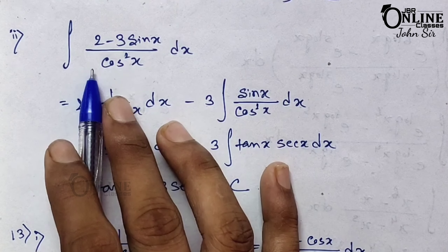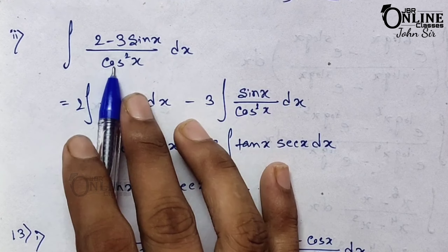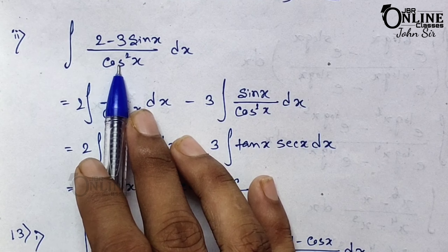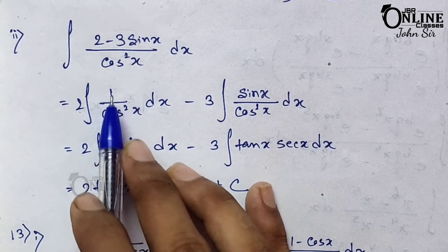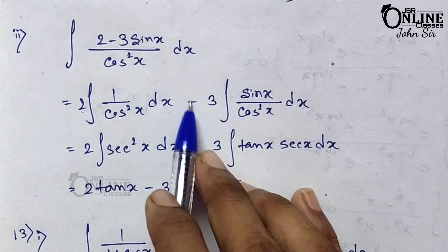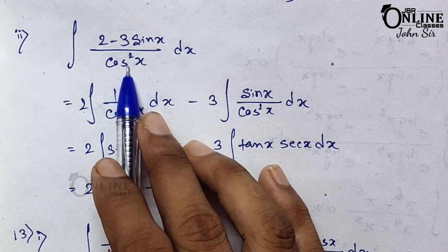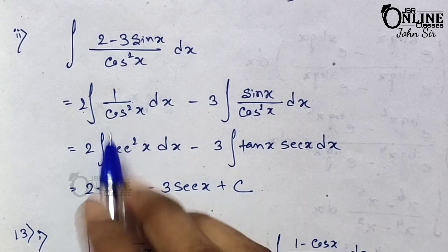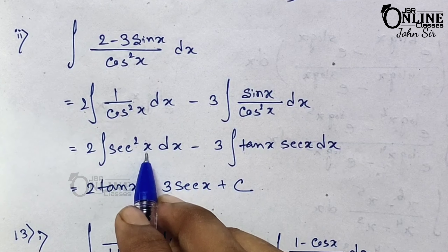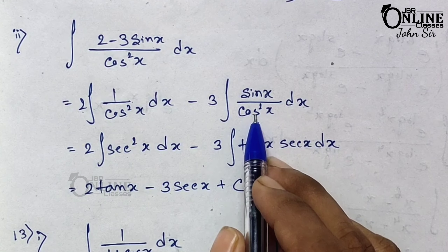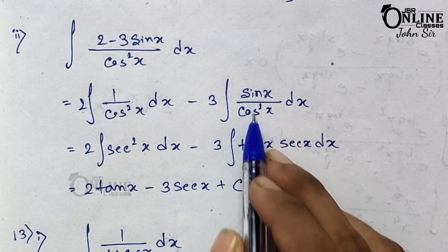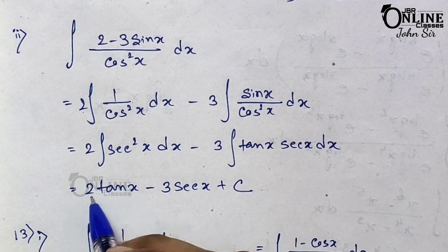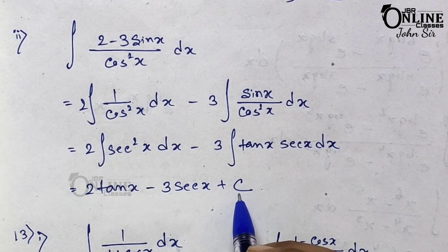Sum 12.2: integration of (2 − 3sin x) / cos²x. Separate this: 2·(1/cos²x) − 3·(sin x / cos²x). Now 1/cos²x = sec²x, and sin x/cos²x = (sin x/cos x)·(1/cos x) = tan x·sec x. So integration gives 2·tan x − 3·sec x + c.